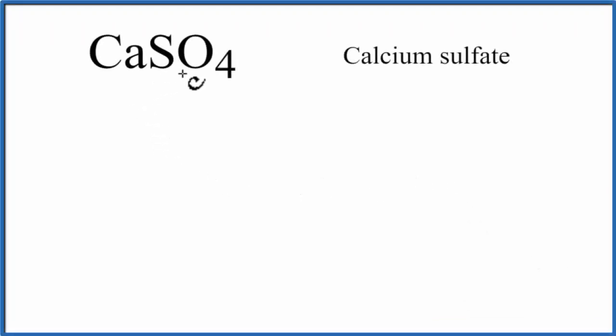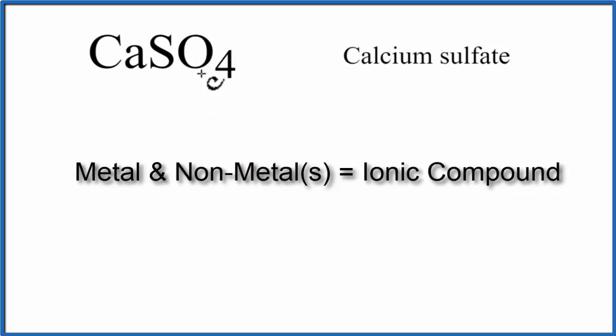To draw the Lewis structure for CaSO4, calcium sulfate, we need to recognize that calcium is a metal, and then S and O, those are non-metals. So when we have a metal bonded to a group of non-metals, we have an ionic compound.